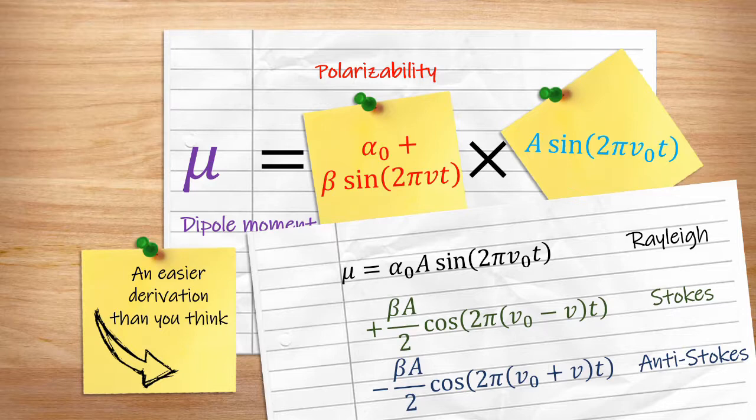One where the energy isn't modified, which corresponds to elastic Rayleigh scattering, and two where the energy increases or decreases, called Stokes or anti-Stokes scattering.